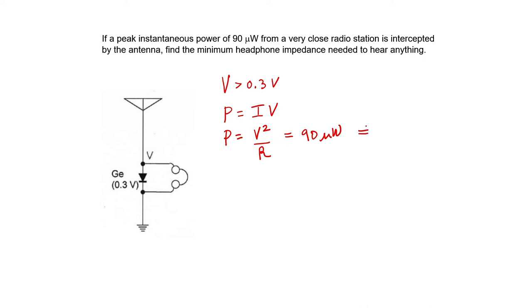If I solve this equation for V squared, I get RP. And we know that the voltage has to be greater than 0.3 volts. So V squared has to be greater than 0.3 squared. RP has to be greater than 0.3 squared. And because the power here is the peak power, we can see that the resistance has to be larger than 0.3 squared divided by 90 times 10 to the minus 6, and that unit is going to be ohms. So the resistance of the headphones has to be larger than 1 kiloohm.